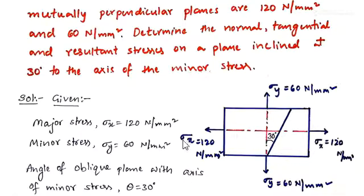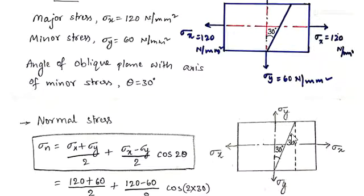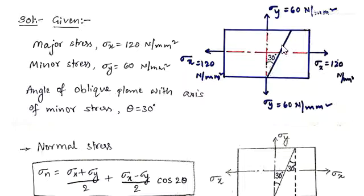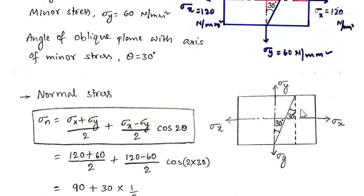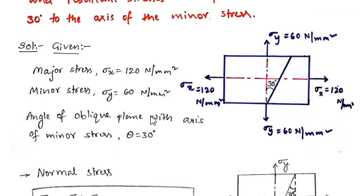The theta value is 30 degrees. In our derivation, we take angle theta with the plane. Whether you measure the angle with the plane or with the minor stress axis, both are the same because these are alternate angles. So theta is directly taken as 30 degrees. Our aim is to find the normal stress, shear stress, and resultant stress on this oblique plane.